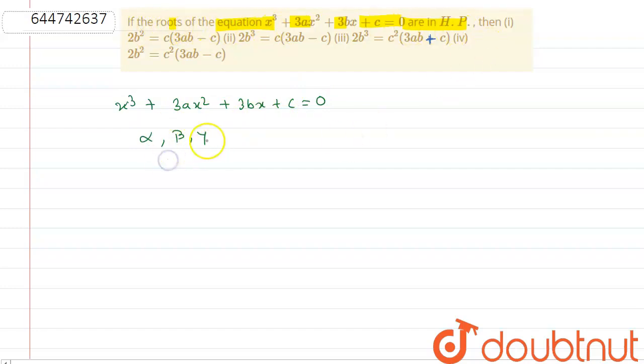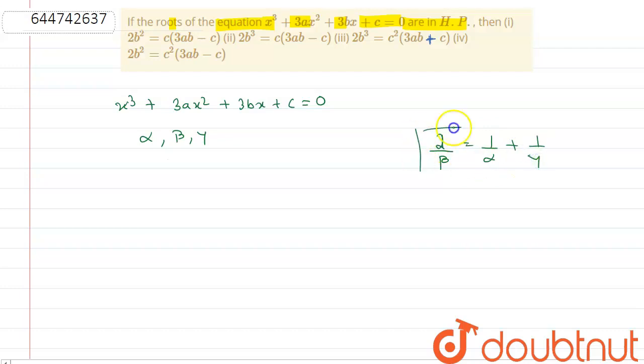When the roots are in HP, that means 2/β = 1/α + 1/γ. That is the rule of HP.